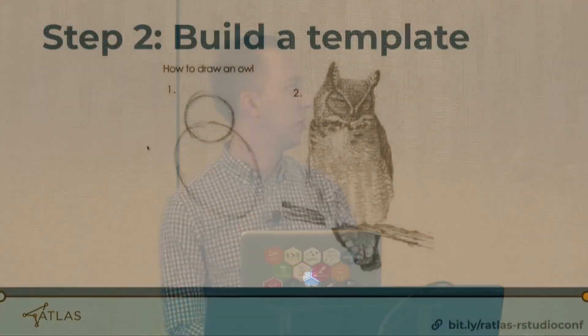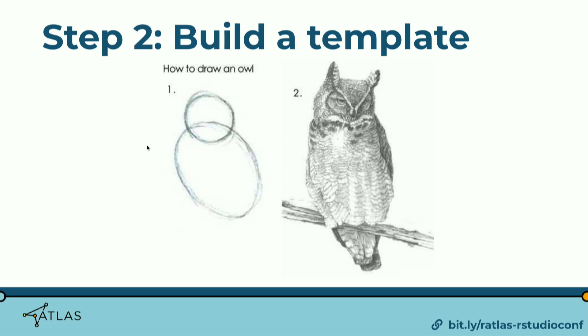Step two is to build your template — which is obviously not that easy. It's an iterative process: you start a template, render your document, realize it's not exactly what you wanted, make some tweaks, re-render, and so on until you reach the final version. Today we're going to talk about how to do this with a Microsoft Word template, because I think it's the most straightforward. But you could do this with any type of R Markdown output.